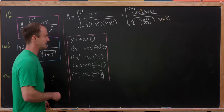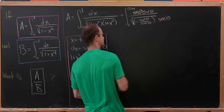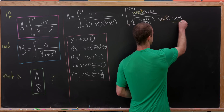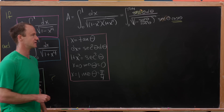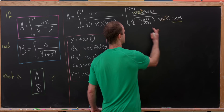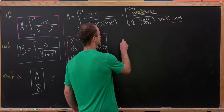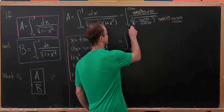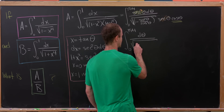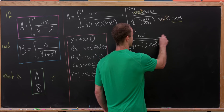Flipping that remaining secant theta into the denominator turns it into cosine theta, since cosine is 1 over secant. Then bringing this cosine theta inside the square root requires squaring it, giving us the integral from 0 to pi over 4 of d theta over the square root of cosine squared theta minus sine squared theta.